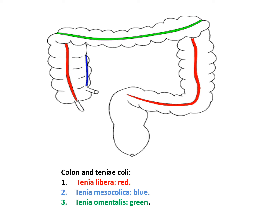You can see three types of taenia: taenia libera, taenia mesocholica, and taenia omentalis. Taenia libera is shown in red — this is taenia libera. The blue color is taenia mesocholica, and the green one is taenia omentalis. The appendix and the ileocecal junction are also visible in this image.